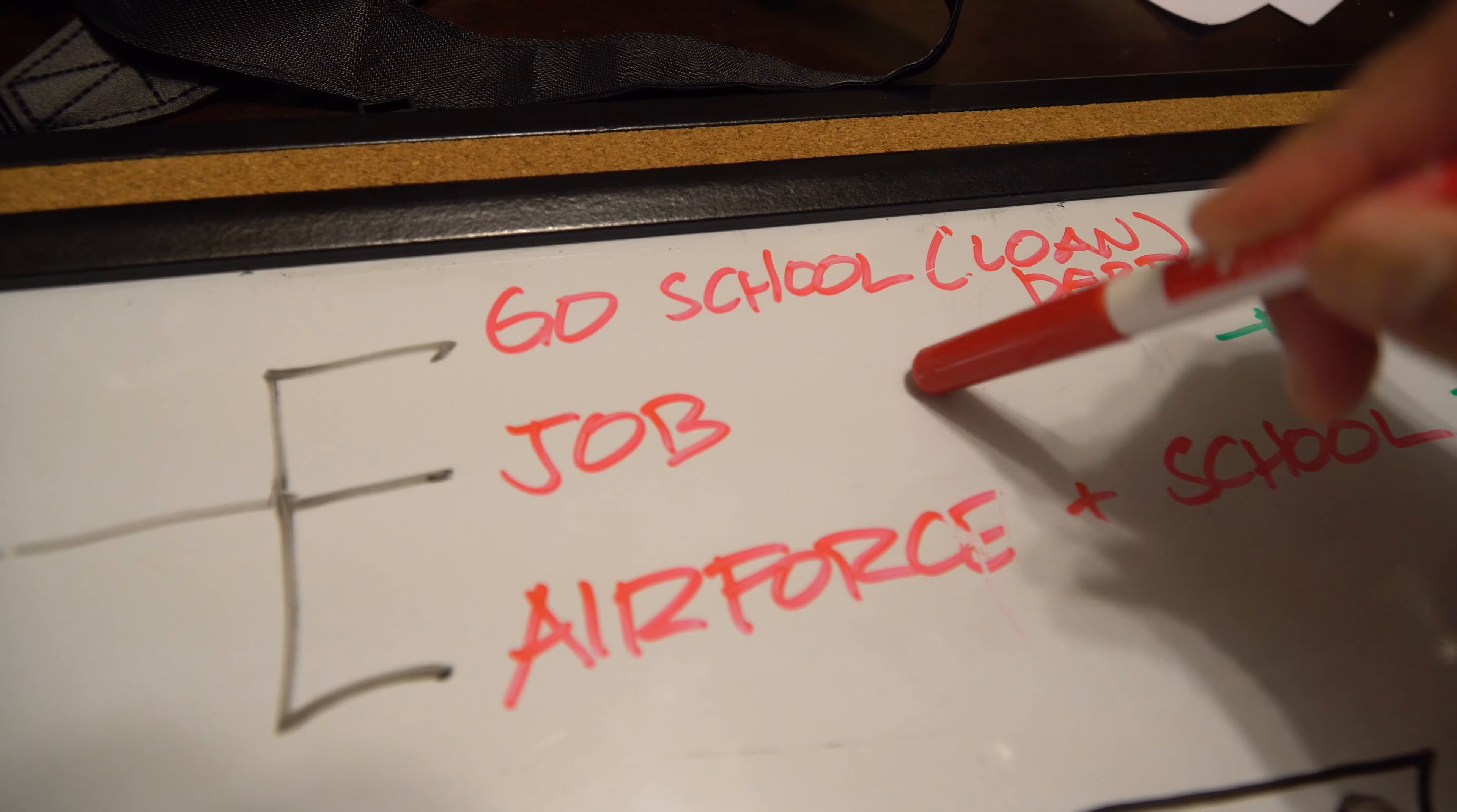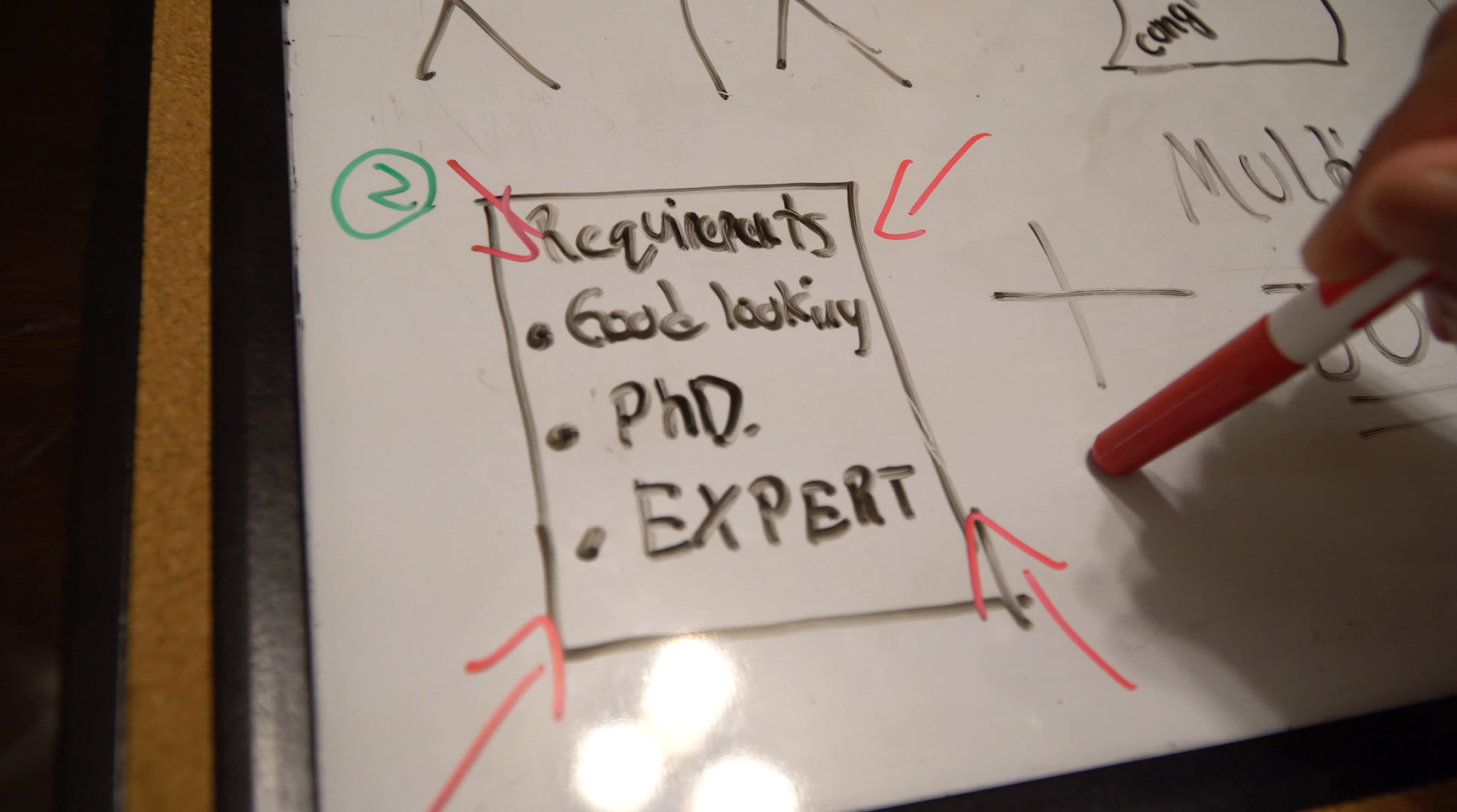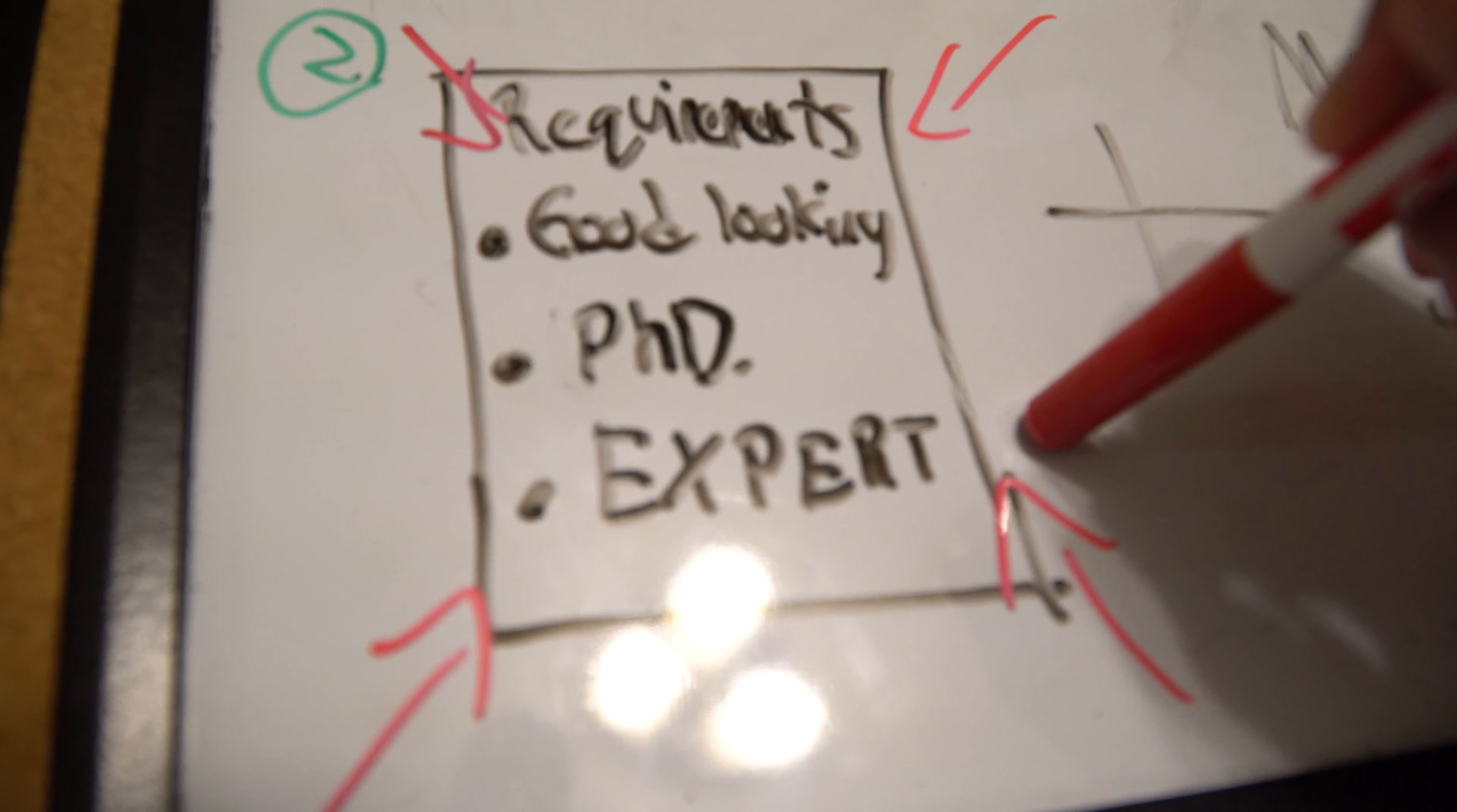So to picture it out, certain companies need a degree or some kind of requirements for you to join the company. You have to be good-looking. Oh, but I got that already. But some of the companies, you have to be an expert or you have certain kinds of degrees or PhDs, MBAs just to get into their company.